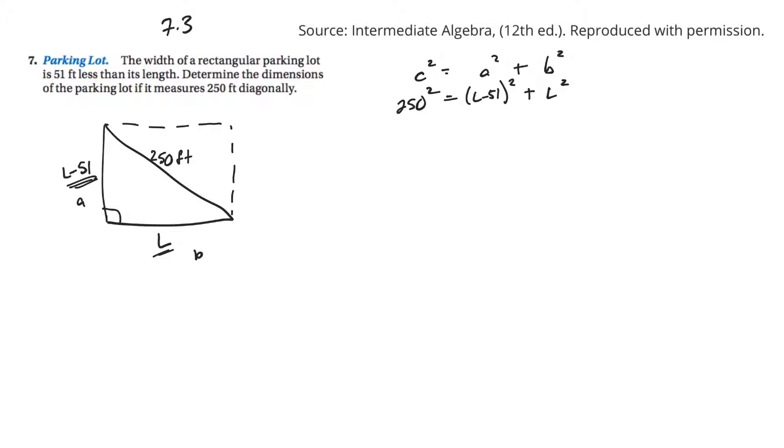First thing to do would be to take this L minus 51 and foil it out. Use the distributive property to foil it. I need a calculator. 250 squared would be 62500.